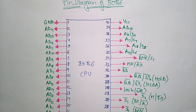Coming to the next topic in the subject Microprocessor: the pin diagram of the 8086 microprocessor. In the previous video I explained the internal architecture of the 8086 microprocessor; now let us see the pin configuration.